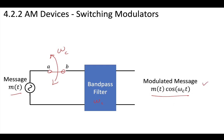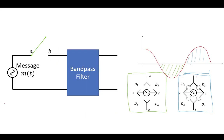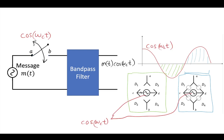We just saw a diode bridge that you can use to make that. This circuit acts like a switch where when you have the reverse bias the switch is open, and when you have the forward bias the switch is closed — each one controlled by your carrier frequency.